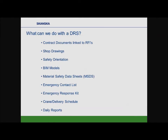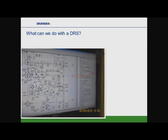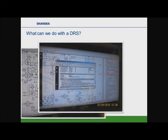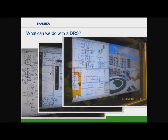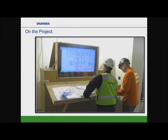Now, a paperless job site — digital resource stations. What is a digital resource station? A lot of people call them kiosks; we call them digital resource stations. It's basically a big monitor with a computer locked in a watertight box. With them, you can have contract documents linked to RFIs, shop drawings, safety orientation videos, BIM models, MSDS sheets, emergency contact lists, and we have a first aid kit in every one of our digital resource stations. On one of our first stations, a carpenter built a plywood box and we put the monitor, computer, and printer inside.